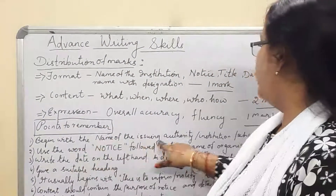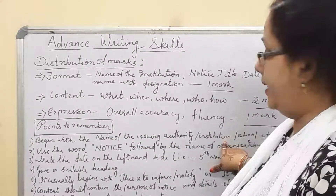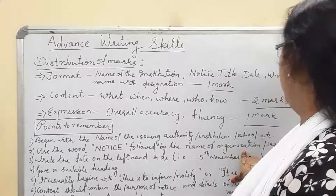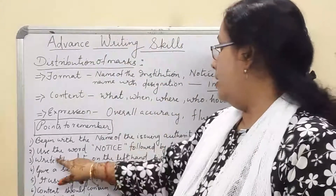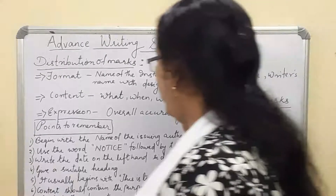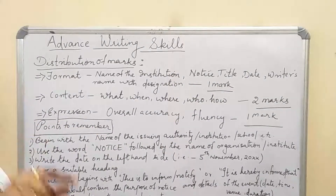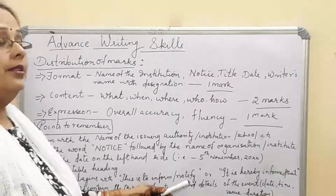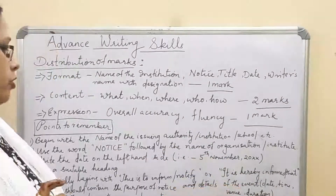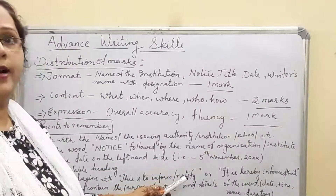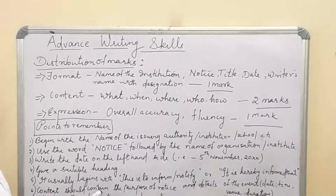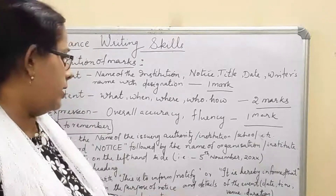Points to remember: begin with the name of the issuing authority — the institution or school. Use the word 'NOTICE' in block letters, followed by the name of the organization, and underline it. Write the date on the left-hand side in the format '5th November, 20XX'. Give a suitable heading to your notice. Your notice usually begins with: 'This is to inform' or 'This is to notify' or 'It is hereby informed that'.